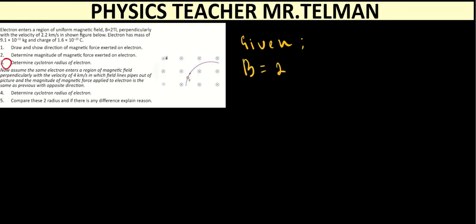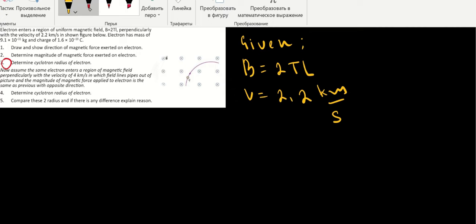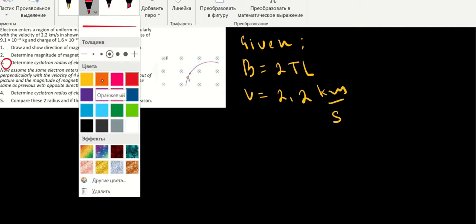B equal to 2 Tesla. B is the magnetic field. Then the velocity equal to 2.2 kilometers per second. You see, it is kilometers and it is not the SI unit. That is why in the future we will need to convert it to the units of the length.